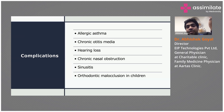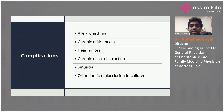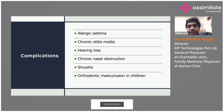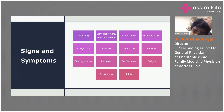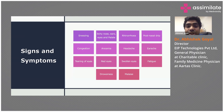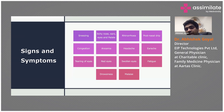Now, what are the complications? A person can have allergic asthma, chronic otitis media, hearing loss due to blockage of the Eustachian tube, chronic nasal obstruction, sinusitis, and orthodontic malocclusion in children. These are the complications of allergic rhinitis.